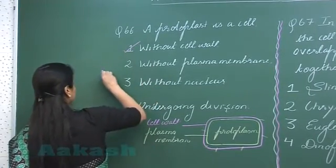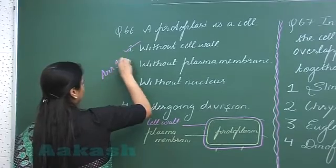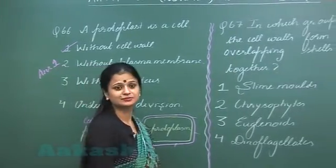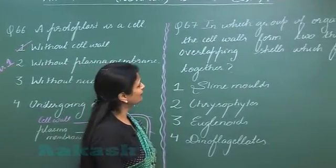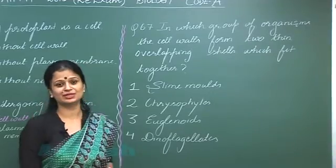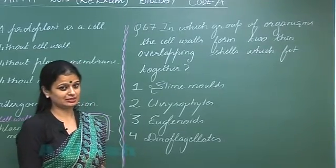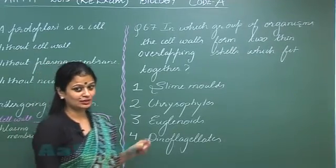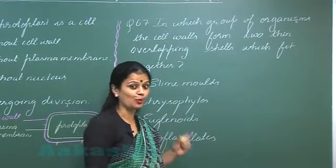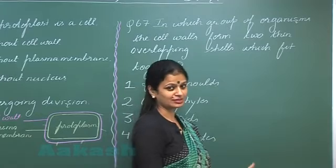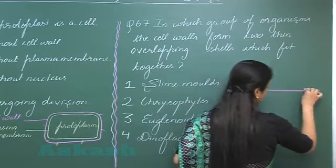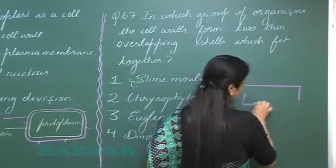Option number one. Now question number 67: In which of the following group of organisms do the cell walls form thin overlapping shells? The condition mentioned here is the one which is present in diatoms. In the case of diatoms, the cell wall is made up of two...